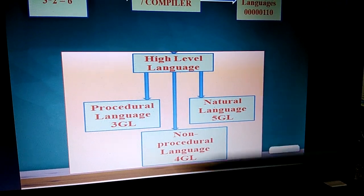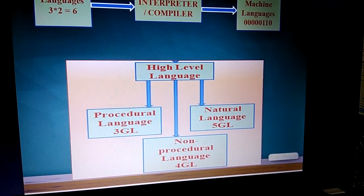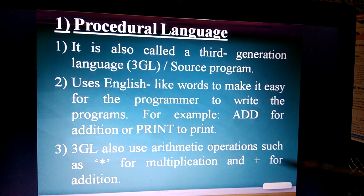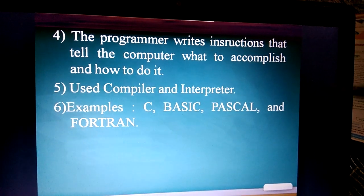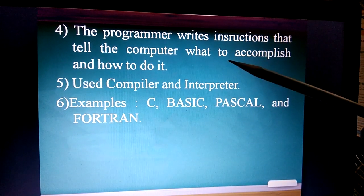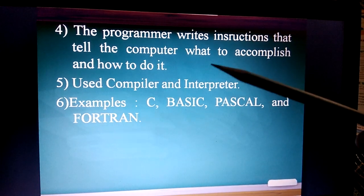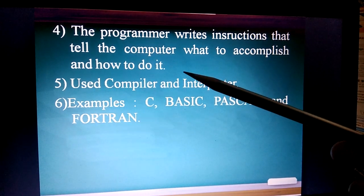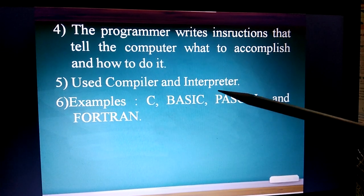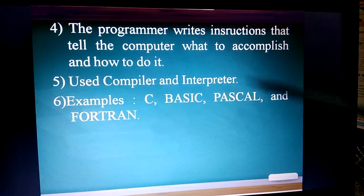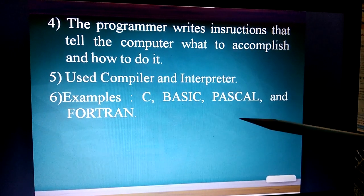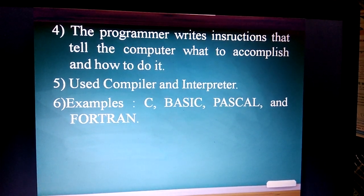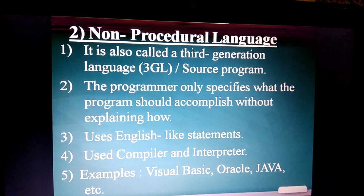High-level language is divided into three parts: procedural, non-procedural, and natural language. In procedural language, the programmer writes instructions that tell the computer what to complete and how to do it. They use a compiler and interpreter to convert the language into machine language. Examples are C, BASIC, Pascal, and FORTRAN.